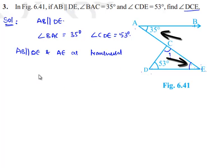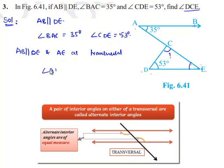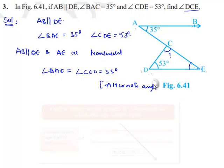Therefore, they will be equal. Angle BAE is equal to angle CED, which will be equal to 35 degrees, as alternate interior angles are equal. Therefore, we got angle CED as 35 degrees.